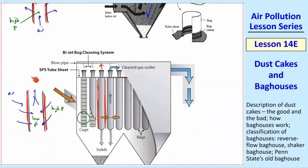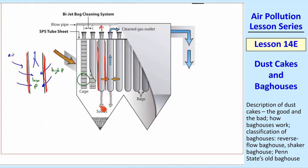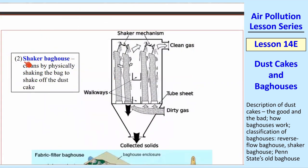To clean these bags, we blow the air the opposite way — the air is blown into the bag, pushing the bag out and stretching it away from the cage. That's what dislodges the dust cake. Once you dislodge the dust cake, the particles just fall down into a hopper. The second kind is called a shaker bag house, where you remove the dust cake by physically shaking the bag. There's some mechanism that shakes the bag and the dust cake just falls off into the hopper.